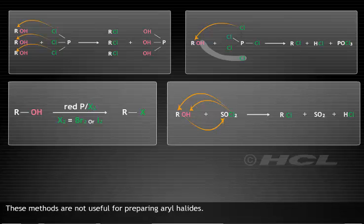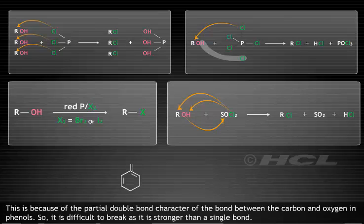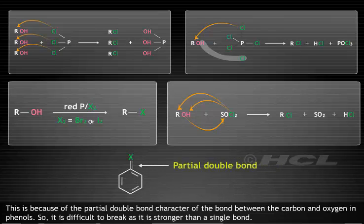These methods are not useful for preparing aryl halides. This is because of the partial double bond character of the bond between the carbon and oxygen in phenols. So, it is difficult to break as it is stronger than a single bond.